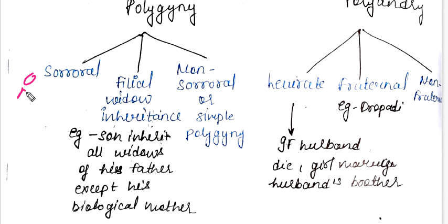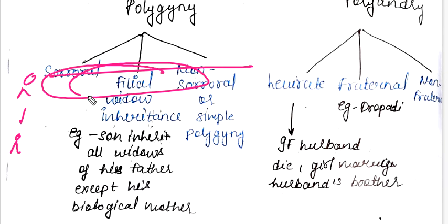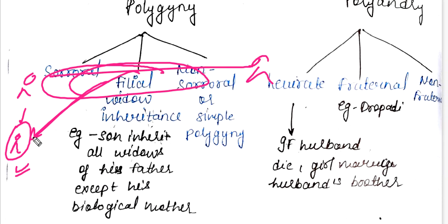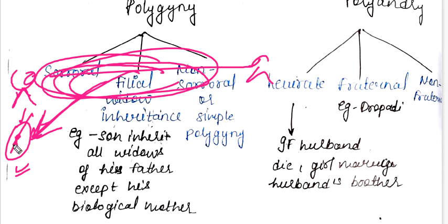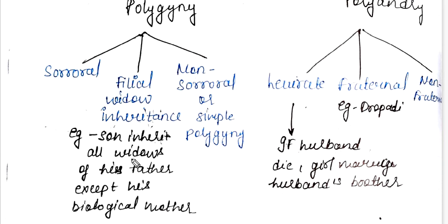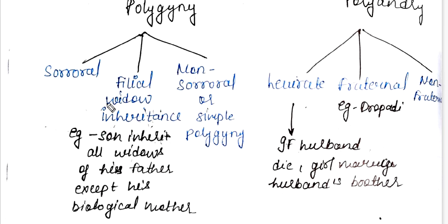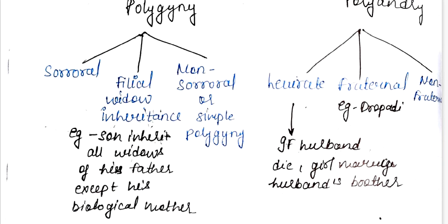For example, one king has a lot of wives. After the king dies, the son inherits all the widows of his father, except his biological mother. The son inherits all the widows of his father, except his biological mother.